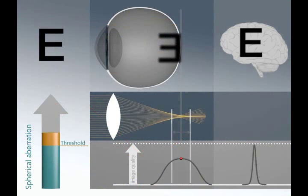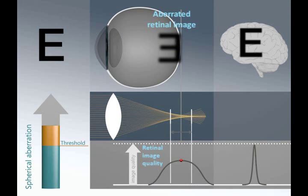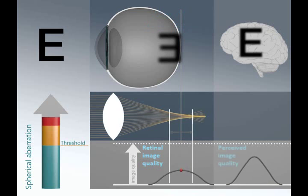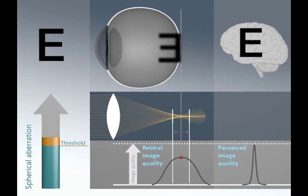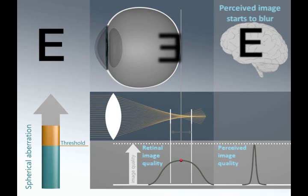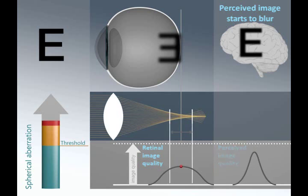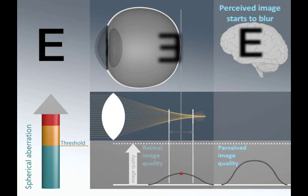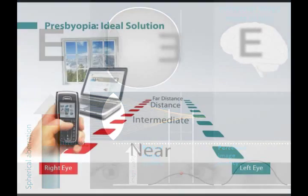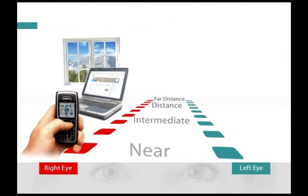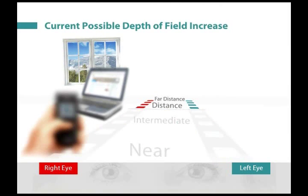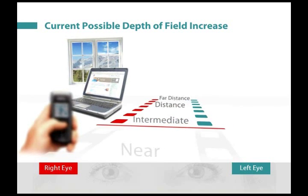As spherical aberration is increased further, this continues to degrade the retinal image and one reaches a threshold beyond which the visual cortex is no longer able to completely process the degraded image, meaning that the perceived image starts to blur, although the perceived image is still significantly less blurred than the retinal image. Our work taught us that it is possible to increase the depth of field by the equivalent of about one and a half diopters before reaching this threshold.